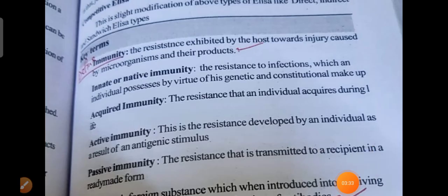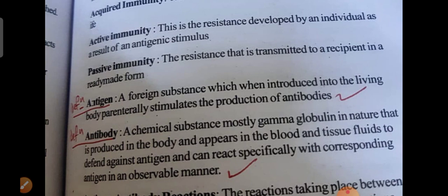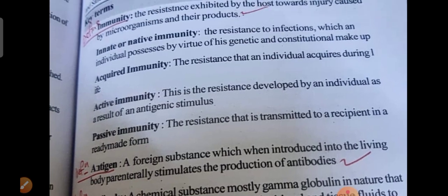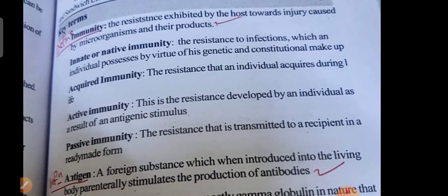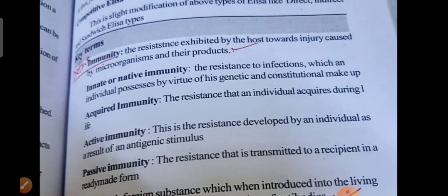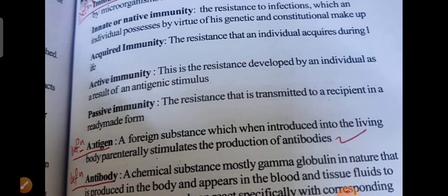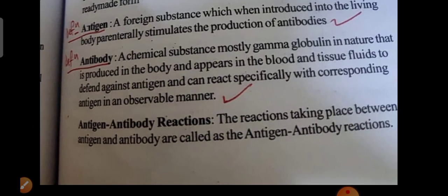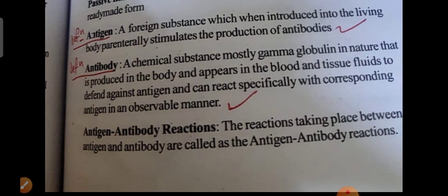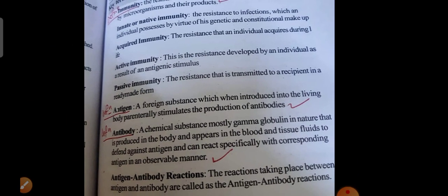Next, immunity: define immunity and types of immunity. Also know the differentiation between antigen-antibody reactions, different antigens, and different antibodies — they may ask questions in any format. Immunity is the resistance exhibited by the host towards injury caused by microorganisms and their products. Types include innate, active, and passive immunity. Antigen-antibody reactions are also an important question — this complete page is important for the final examination.